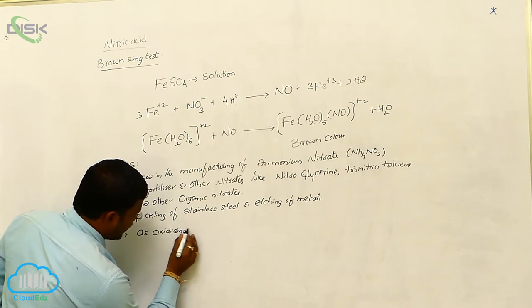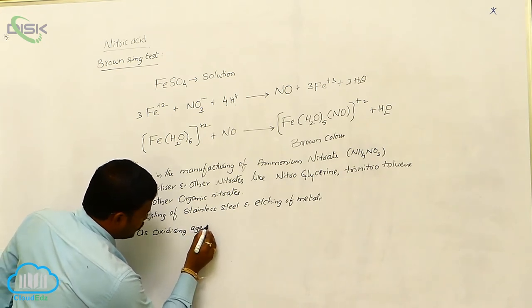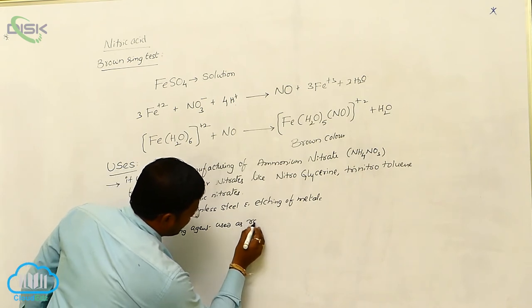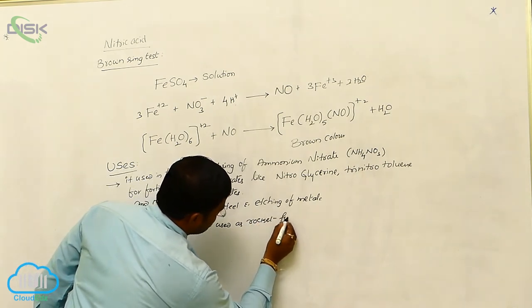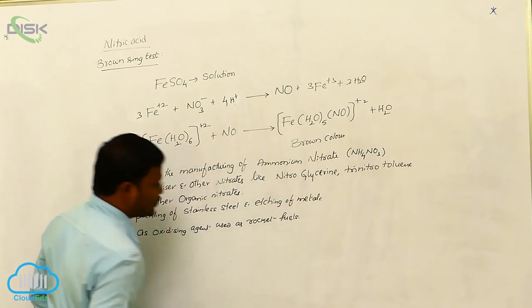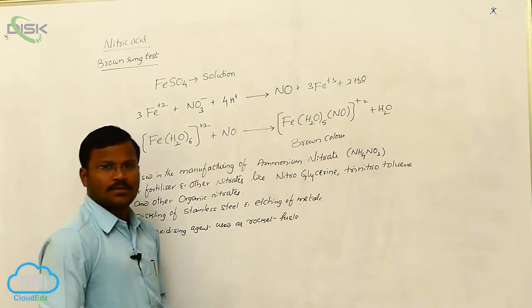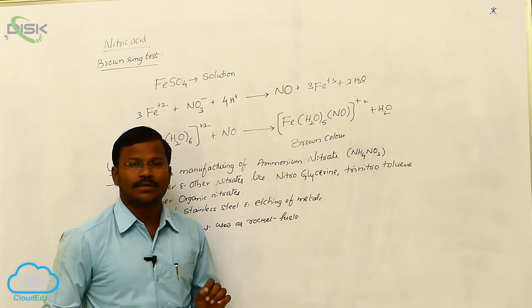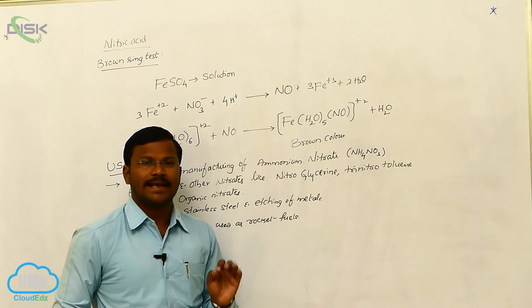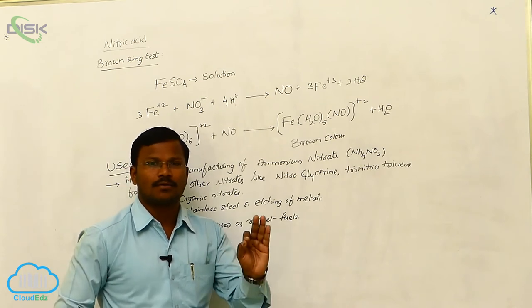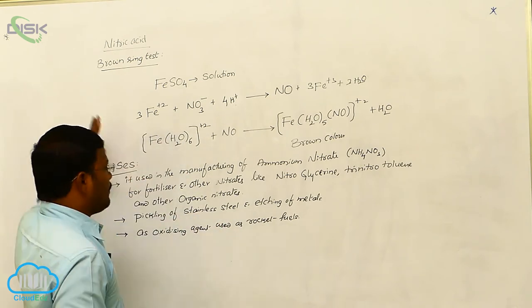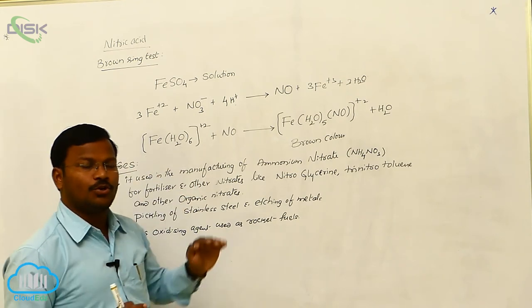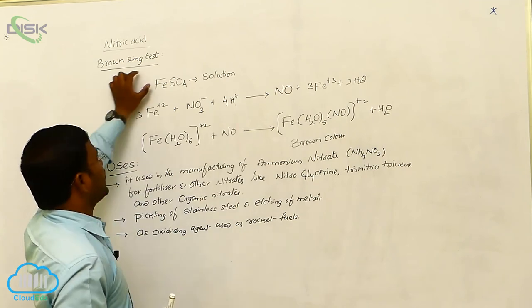Oxidizing agent used as rocket fuels. So this is about nitric acid, the most important oxo acid exhibited by nitrogen atom. Once again, preparation and properties, the most important expected question during this is brown ring test and followed by uses of nitric acid.